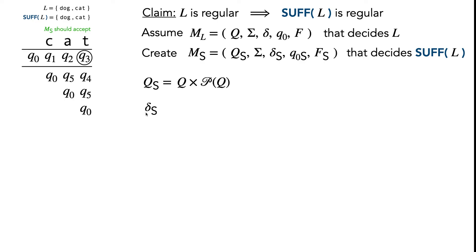Next is our new transition function, δ_S. This is often the trickiest part, and it can really help to first write down what the domain and codomain are. δ_S is a function that takes in a new state, takes in a character, and outputs a new state.